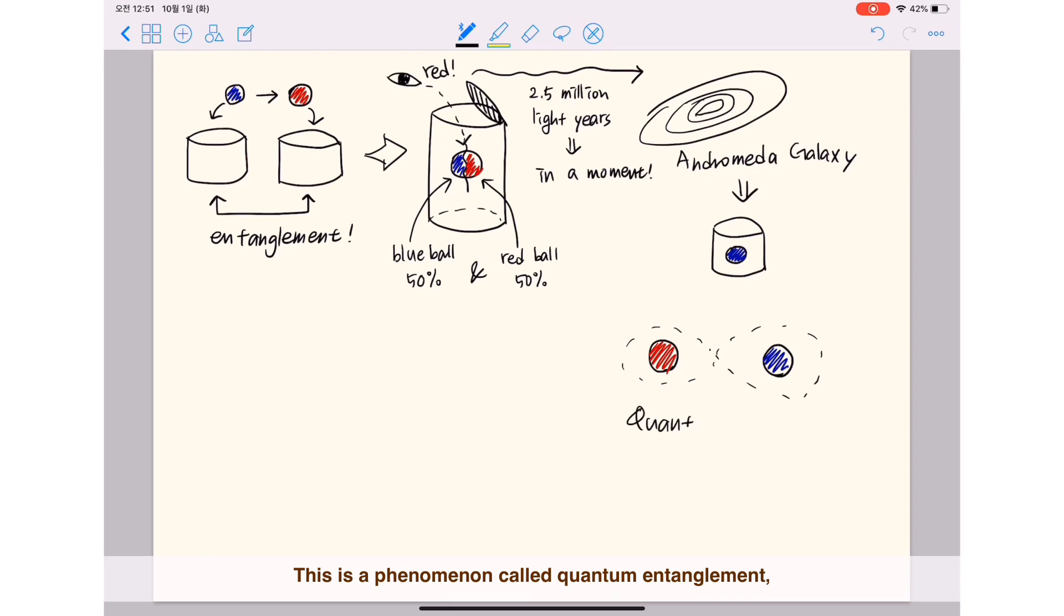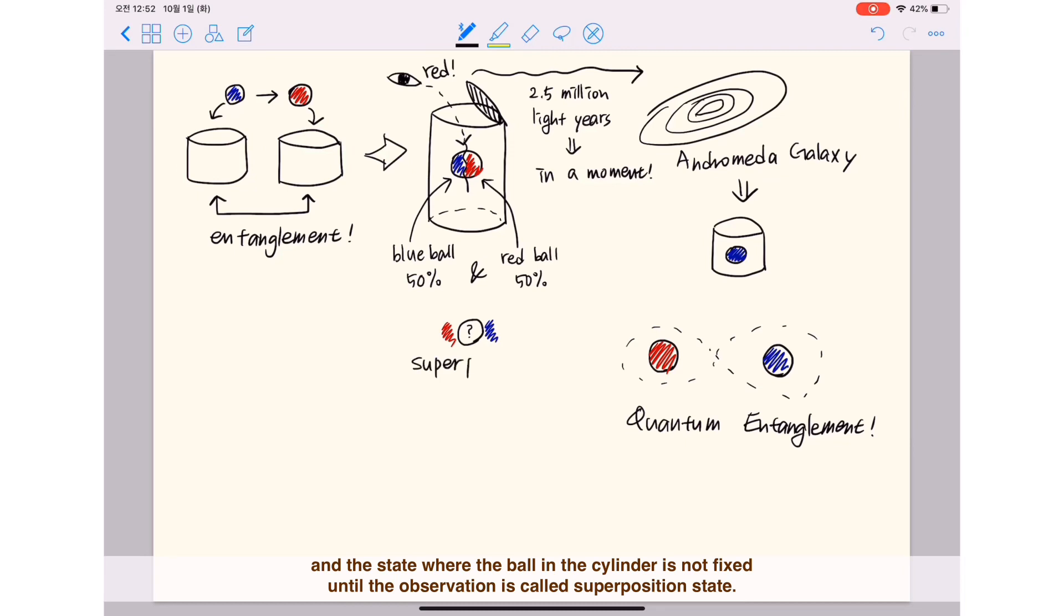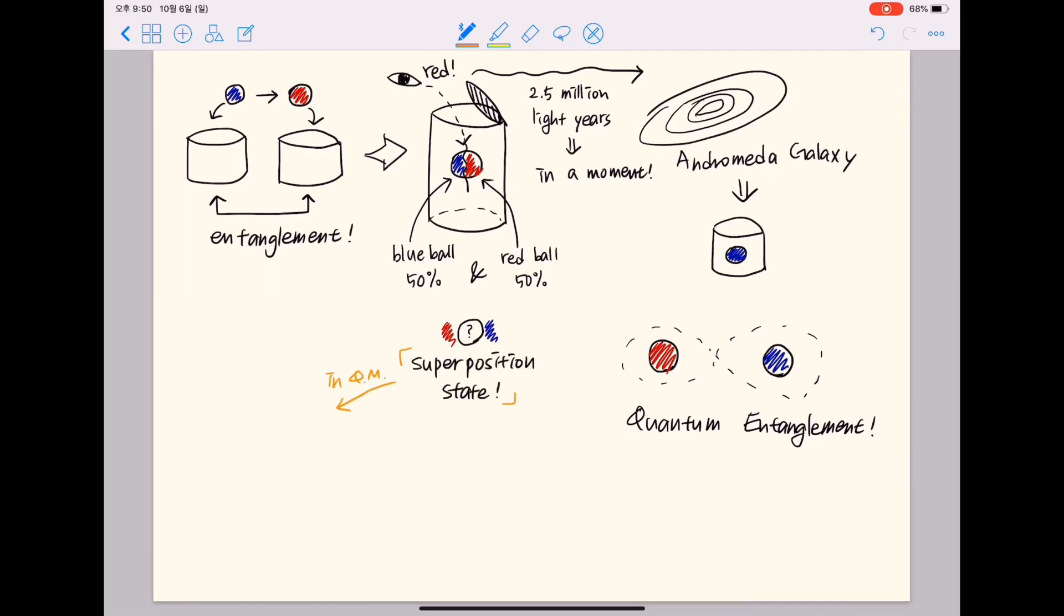This is a phenomenon called quantum entanglement, and the state where the ball in the cylinder is not fixed until the observation is called superposition state. In quantum mechanics, a linear superposition of two states can represent the general quantum state, qubit.